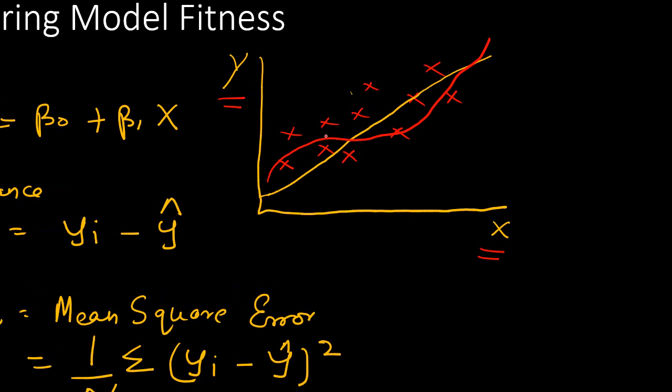No matter whether it is linear or nonlinear, we need to know whether the regression really serves the purpose. It really finds the value of Y accurately given the value of X. How is that going to happen?